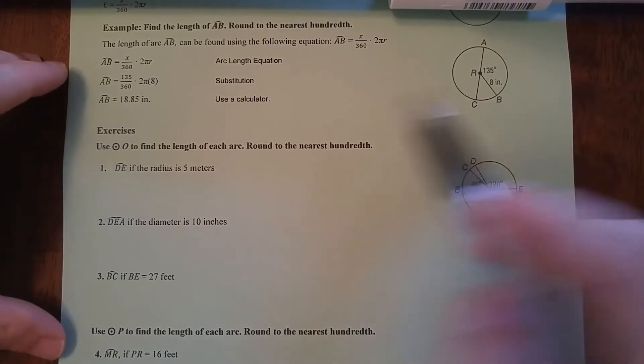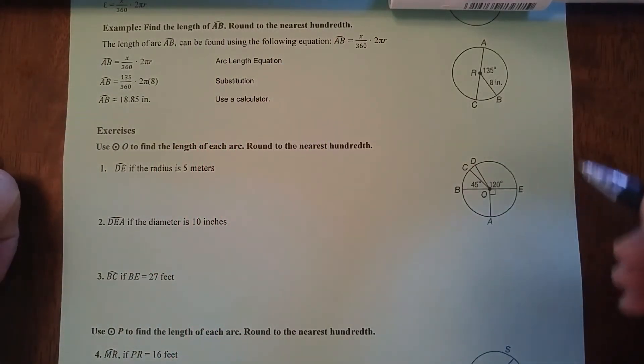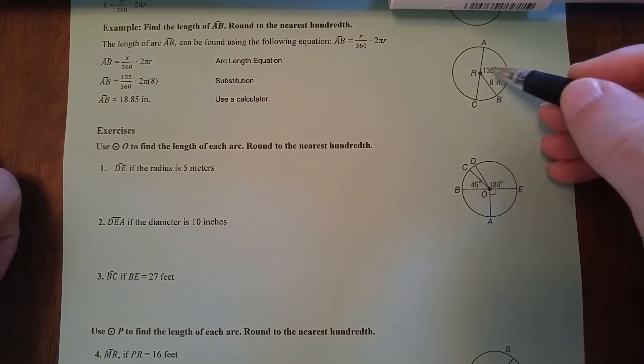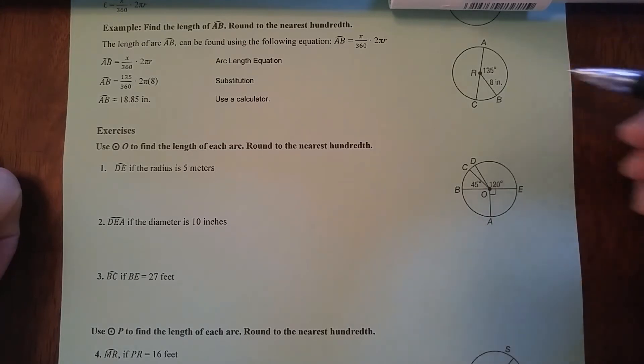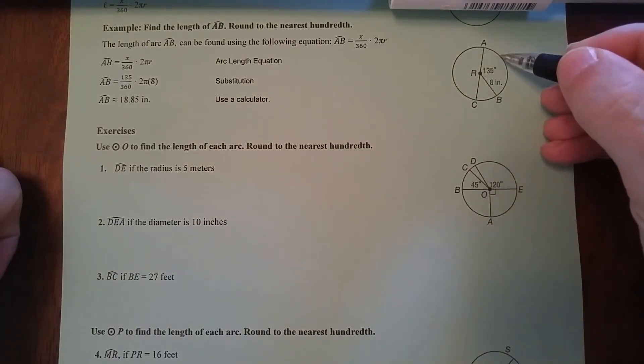Let's go through how to do this starting with the example. In this example, it says find the length of arc AB, round to the nearest hundredth. If they told you to find the measure of arc AB, you would say since the central angle is 135 degrees, it would be 135. But when they ask about length, they're asking what the actual distance is if you were like a little tiny person walking along this arc.